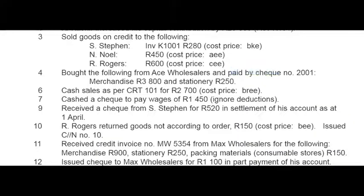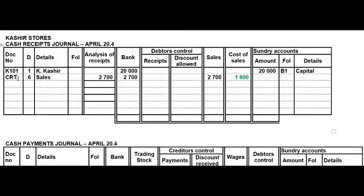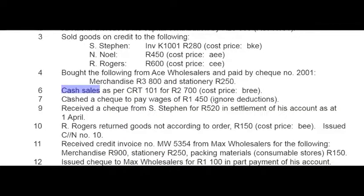On the 6th, cash sales as per CRT 101 for 2700 rand — cash sales will always go to the CRJ. This is a normal sales transaction; you don't have to write the CRT number. You always have to say 'sales' if it's a cash sale. It goes to analysis, remember to draw that line, put it in bank, and use Black Horse to get the cost of sales value.